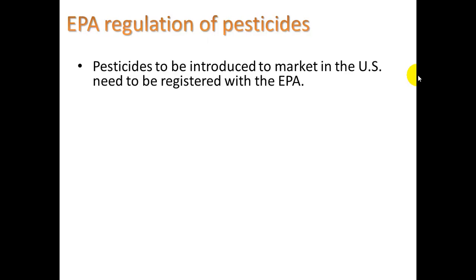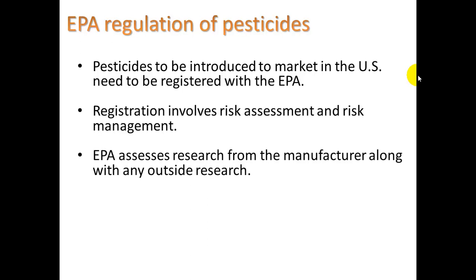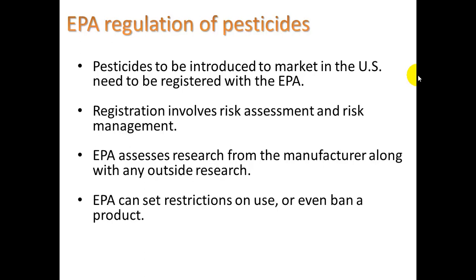Pesticides to be introduced to the market in the U.S. need to be registered with the EPA. Registration involves risk assessment and risk management — a measurement of the toxicity of the chemical and a dose-response analysis. The EPA assesses research from the manufacturer along with any outside research. Of course, manufacturer research may be biased since they want their product in the marketplace. But the EPA can set restrictions on the use or even ban a product.